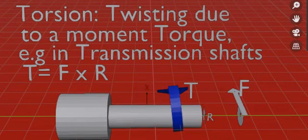Torsion is twisting due to a moment torque, for example in transmission shafts, and the torque is calculated by the force times the radius.